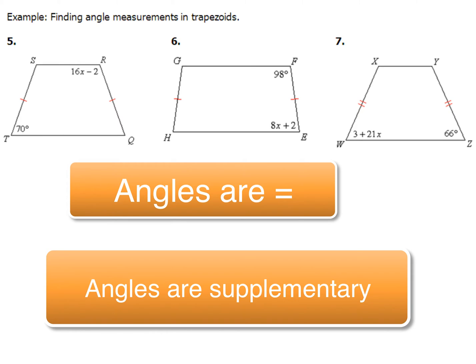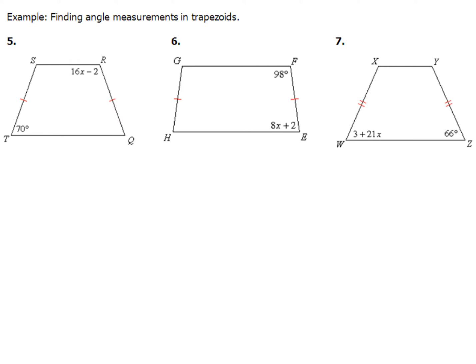So let's take a look at examples 5, 6, and 7 to determine which one of those two equations you'll use to help you find the value of x. Now here for examples 5, 6, and 7, we're going to be taking a look at finding angle measurements in trapezoids.